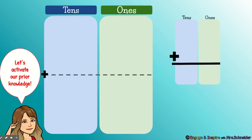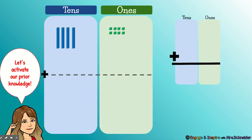Let's activate our prior knowledge — it just means let's remember what we already know. Here we see a problem with two-digit addition without regrouping so that we can remember what we already know. Here we have the problem.